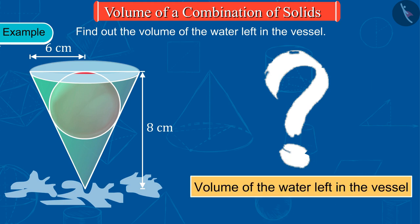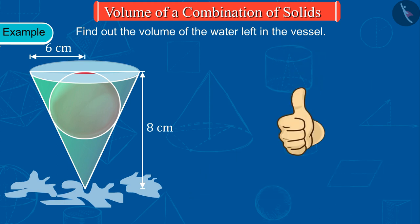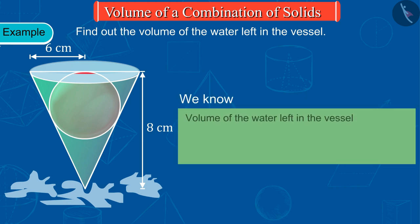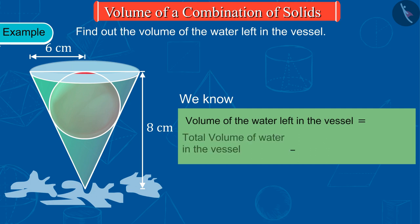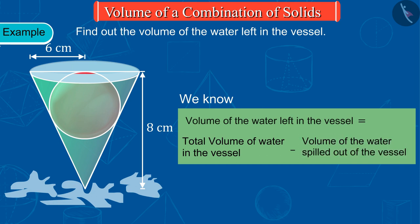Find out the volume of the water left in the vessel. Can you tell how we can find out the volume of the water left in the vessel? We know that the volume of the water left in the vessel is equal to the difference of the total volume of water in the vessel and the volume of the water spilled out of the vessel.